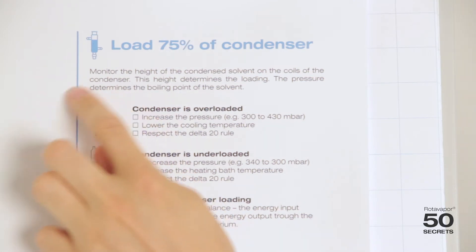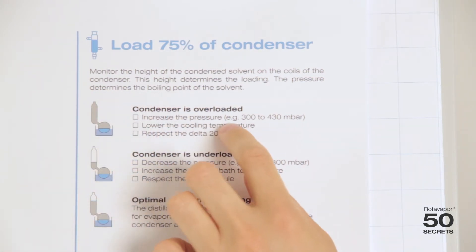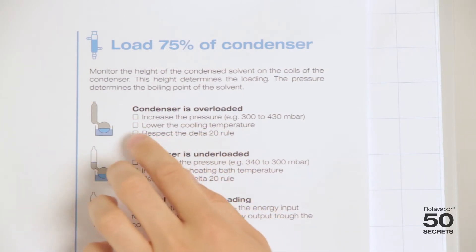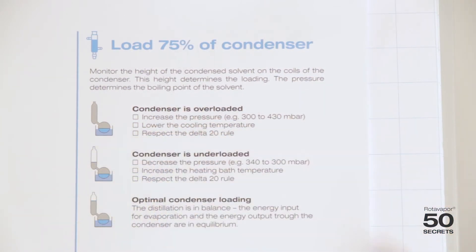If you have a condenser loaded like this, it is overloaded. So then you should increase the pressure, lower the cooling temperature, and always respect the Delta 20 rule.